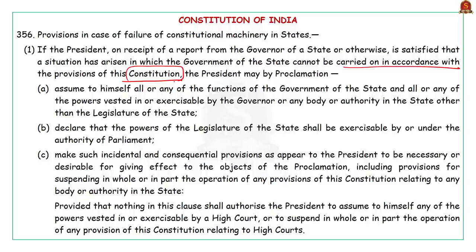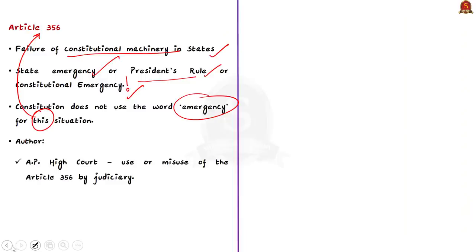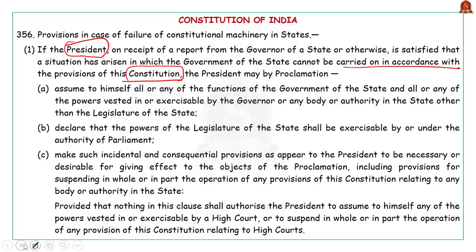Only the President is empowered to proclaim this emergency, not the judiciary. But in Andhra's case, the High Court overstepped this power of the President — this is why the author termed it a misuse of the article by the judiciary. The President can proclaim state emergency under Article 356 on two occasions: first, if he receives a report from the governor of a state indicating a breakdown of the Constitution; or second, due to any other reason, even without the governor's report, as the word 'otherwise' is used in Article 356.